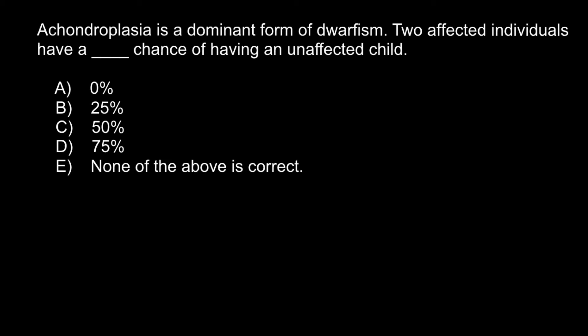Hello and welcome to Nikolai's genetics lessons. Today I have prepared only one multiple choice question for you. Usually my videos include two questions, but this question is not as easy as most of you might think. Here is the problem: Achondroplasia is a dominant form of dwarfism. Two affected individuals have — and you have to choose any of these answers — chances of having an unaffected child.